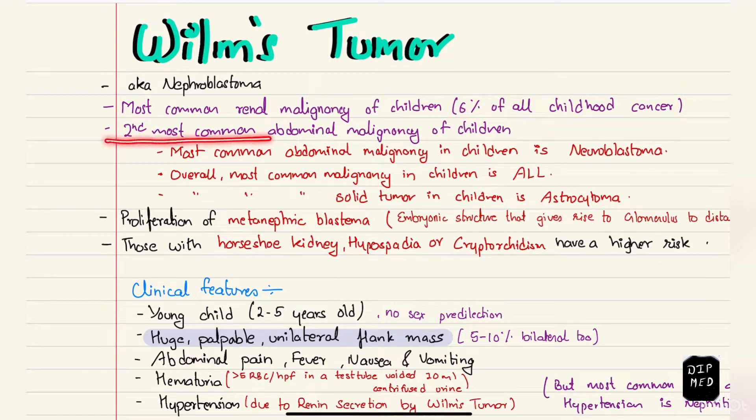It is also the second most common abdominal malignancy of children. The most common abdominal malignancy is neuroblastoma, but overall, the most common malignancy in children is leukemia, acute lymphoblastic leukemia.